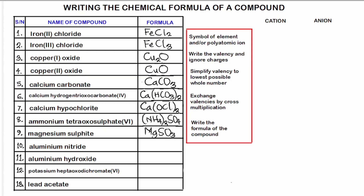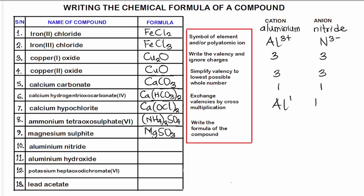I'm citing multiple examples to make us versatile with writing chemical formulas and to make it easy to recall. Number ten: aluminum nitride. The symbol for aluminum ion is Al³⁺ and nitride ion is N³⁻. The valency of aluminum is 3 and nitride is 3. We simplify 3:3 to 1:1. Cross-multiplying gives AlN — the chemical formula for aluminum nitride.